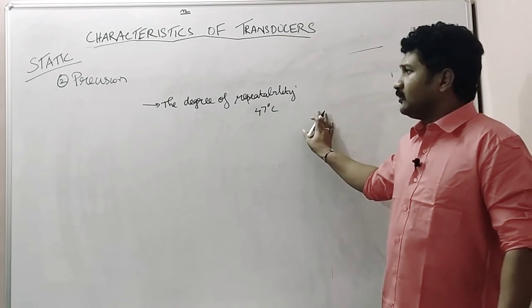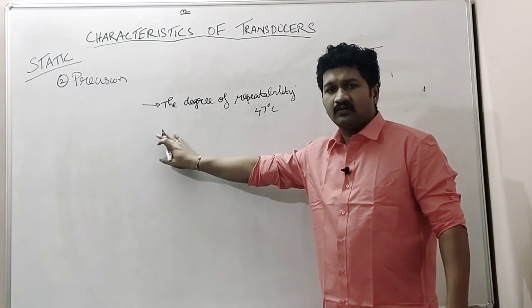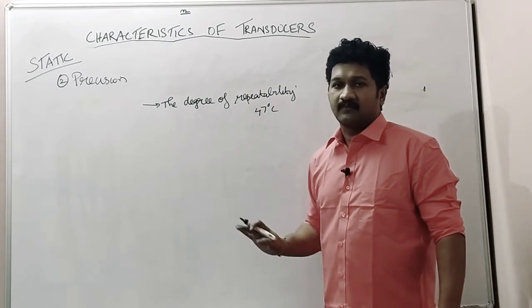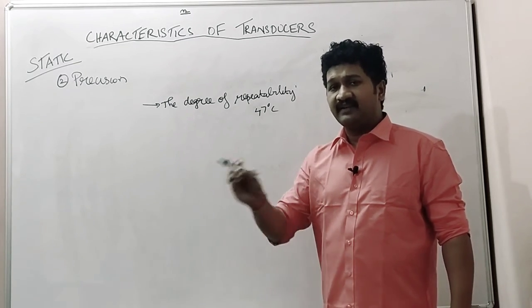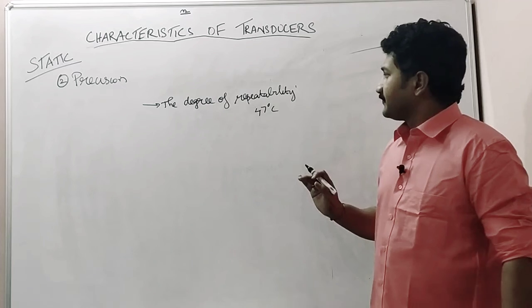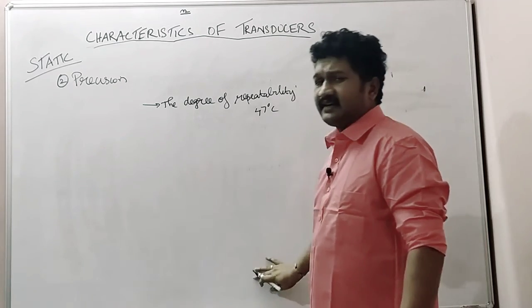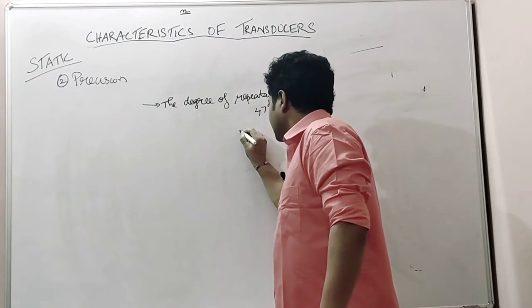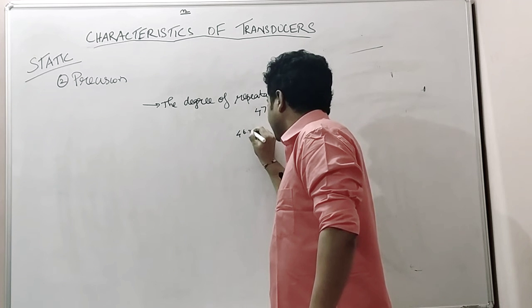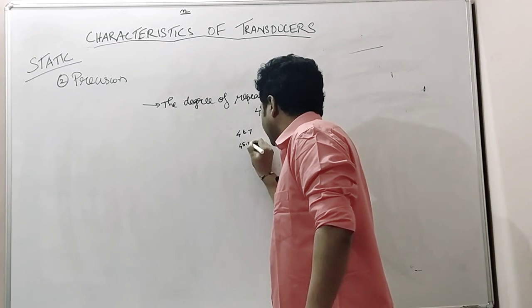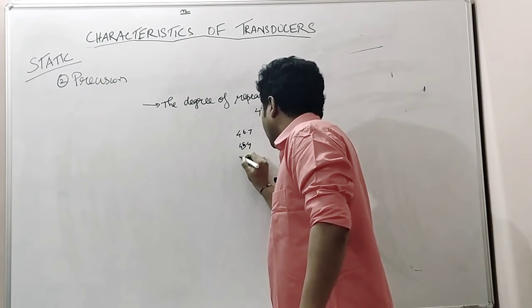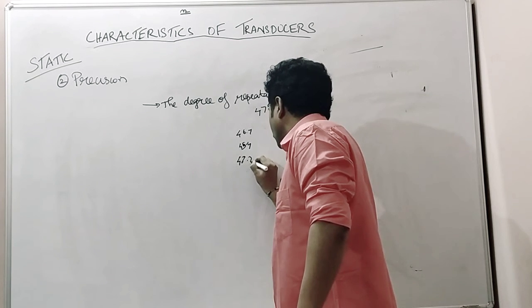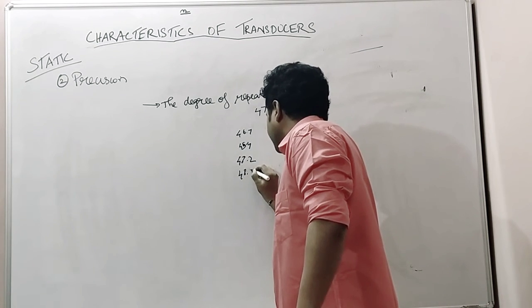Now, you are going to check whether the sensor you are using is precise or not. Is it precise in giving the accurate reading? So, for the 10 trials, the sensor is giving 46.7, 45.4, 47.2, 48.7.